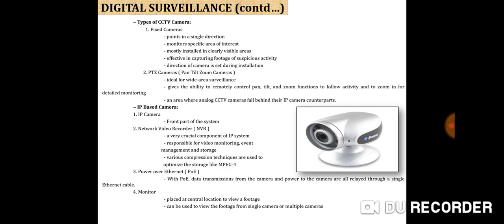IP camera-based systems consist of four components. First, the IP camera, which is the front part of the system. Second, the NVR (Network Video Recorder), a crucial component responsible for video monitoring, event management, and storage. Various compression techniques are used to optimize storage, like MPEG-4. Third, Power over Ethernet (PoE) — with PoE, data transmission from the camera and power to the camera are both handled through a single Ethernet cable. Fourth, the monitor, placed at a central location to view footage from a single camera or multiple cameras.